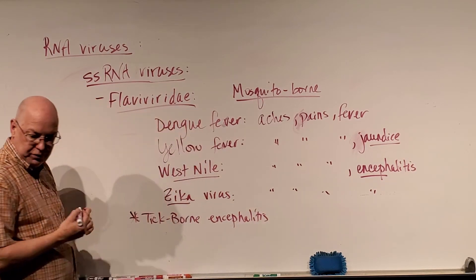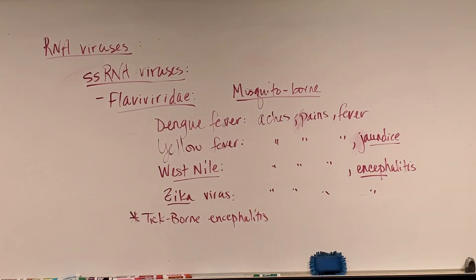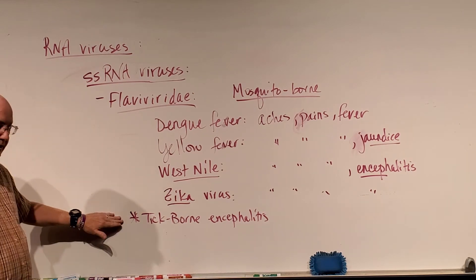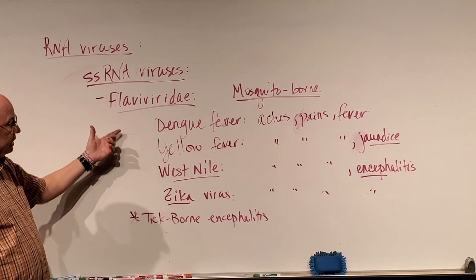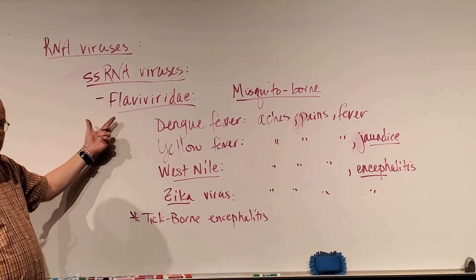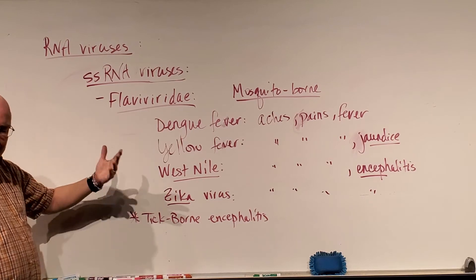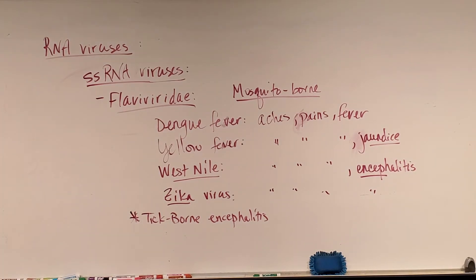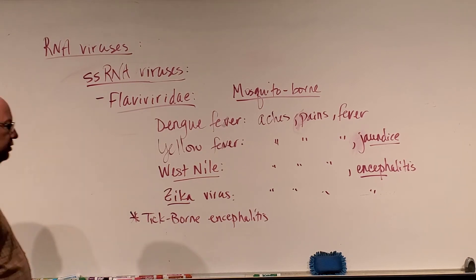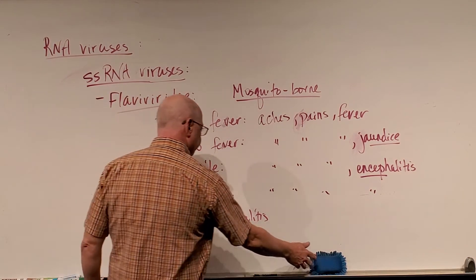There is one Flaviviridae that is not mosquito-borne — tick-borne encephalitis. Tick-borne encephalitis comes from a tick bite and is a type of Flaviviridae that ticks can carry and transmit to humans.